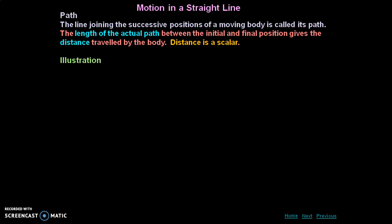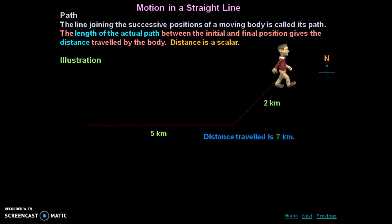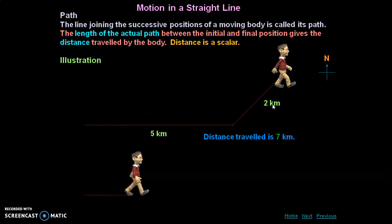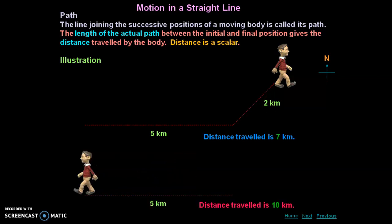For example, if a particle moves 5 km in one direction then 2 km in another direction, the total distance traveled is 7 km. If the particle moves 5 km and then comes back 5 km, the total distance is 10 km. Distance is the actual path length between the final and initial positions of the body traveled between the two points.